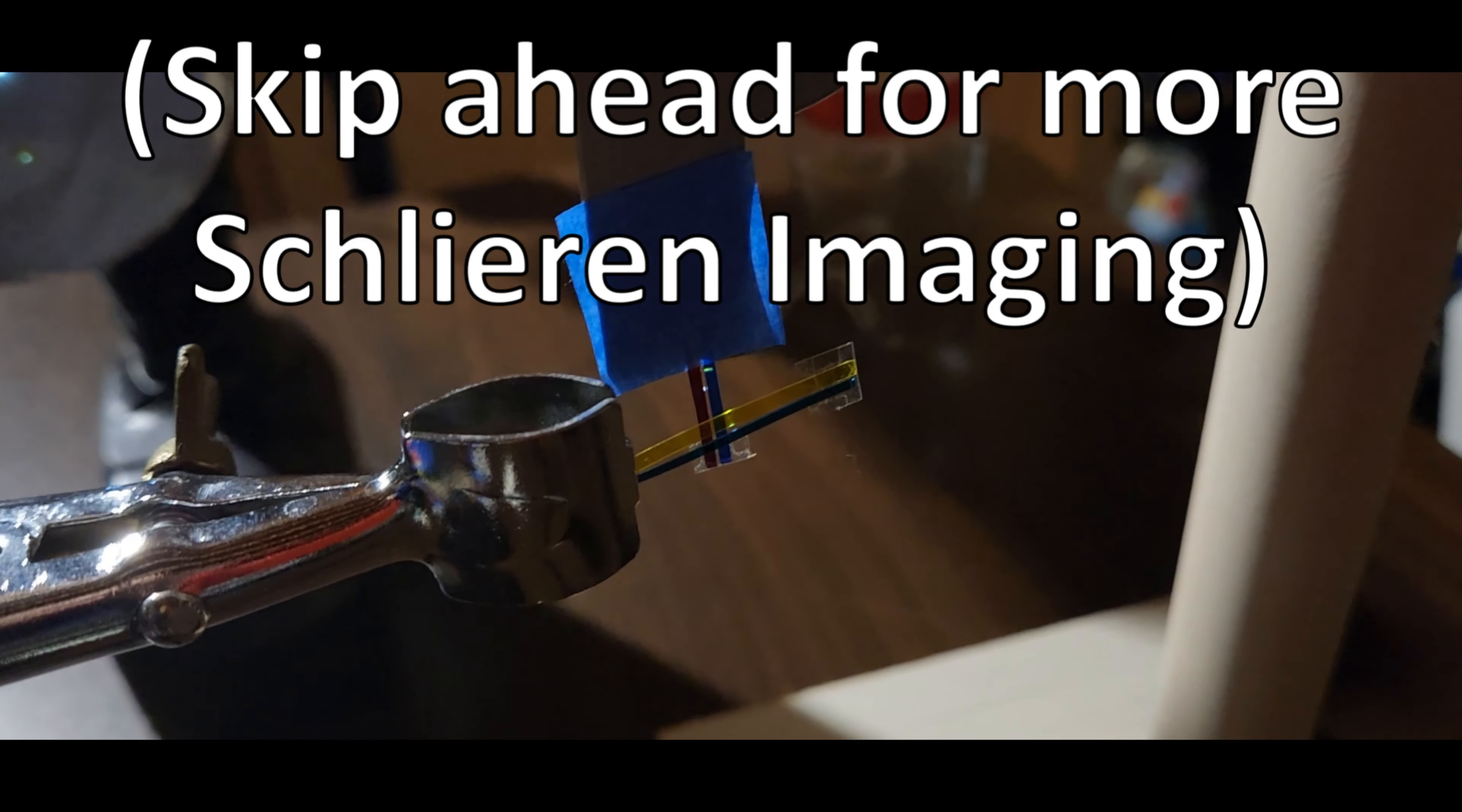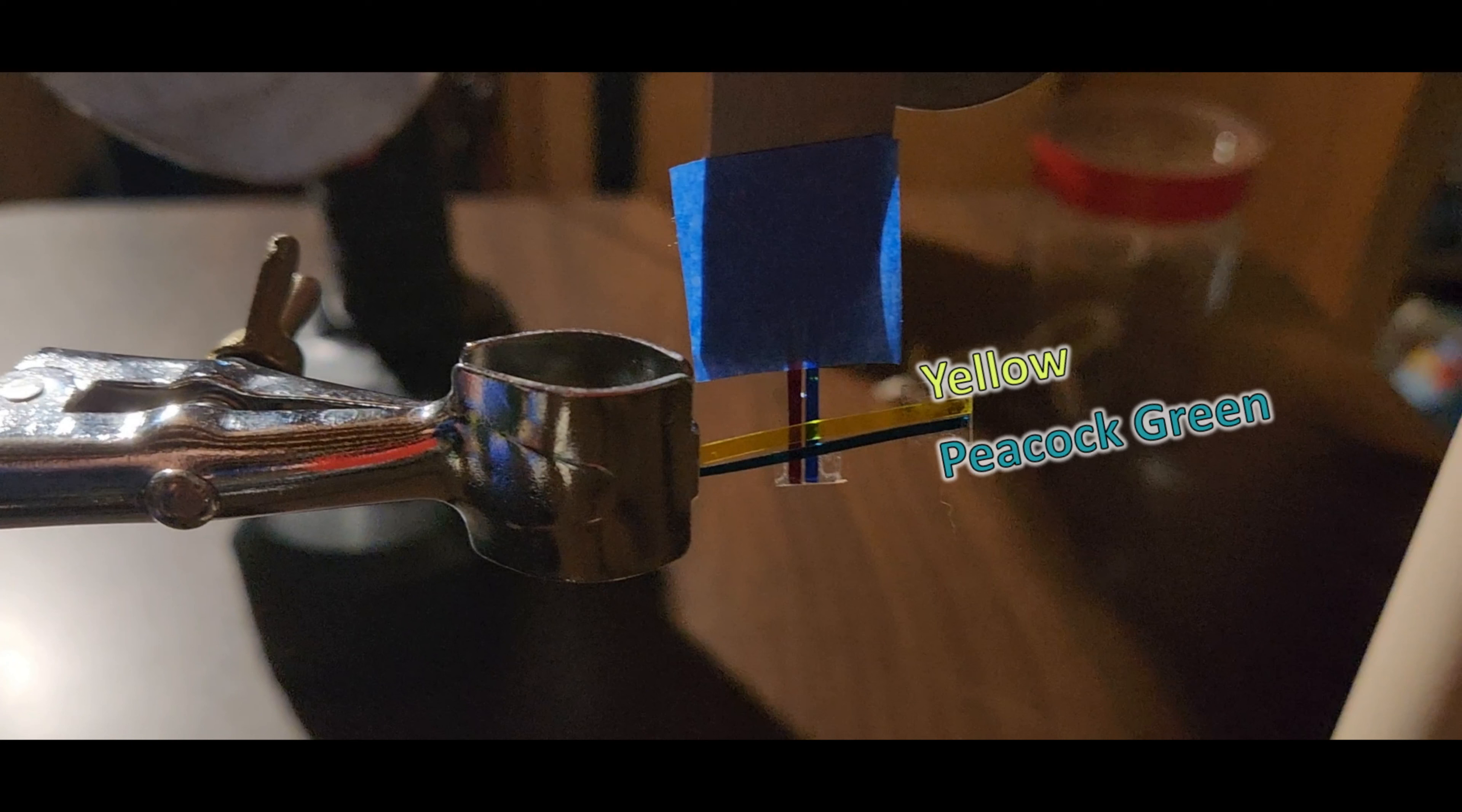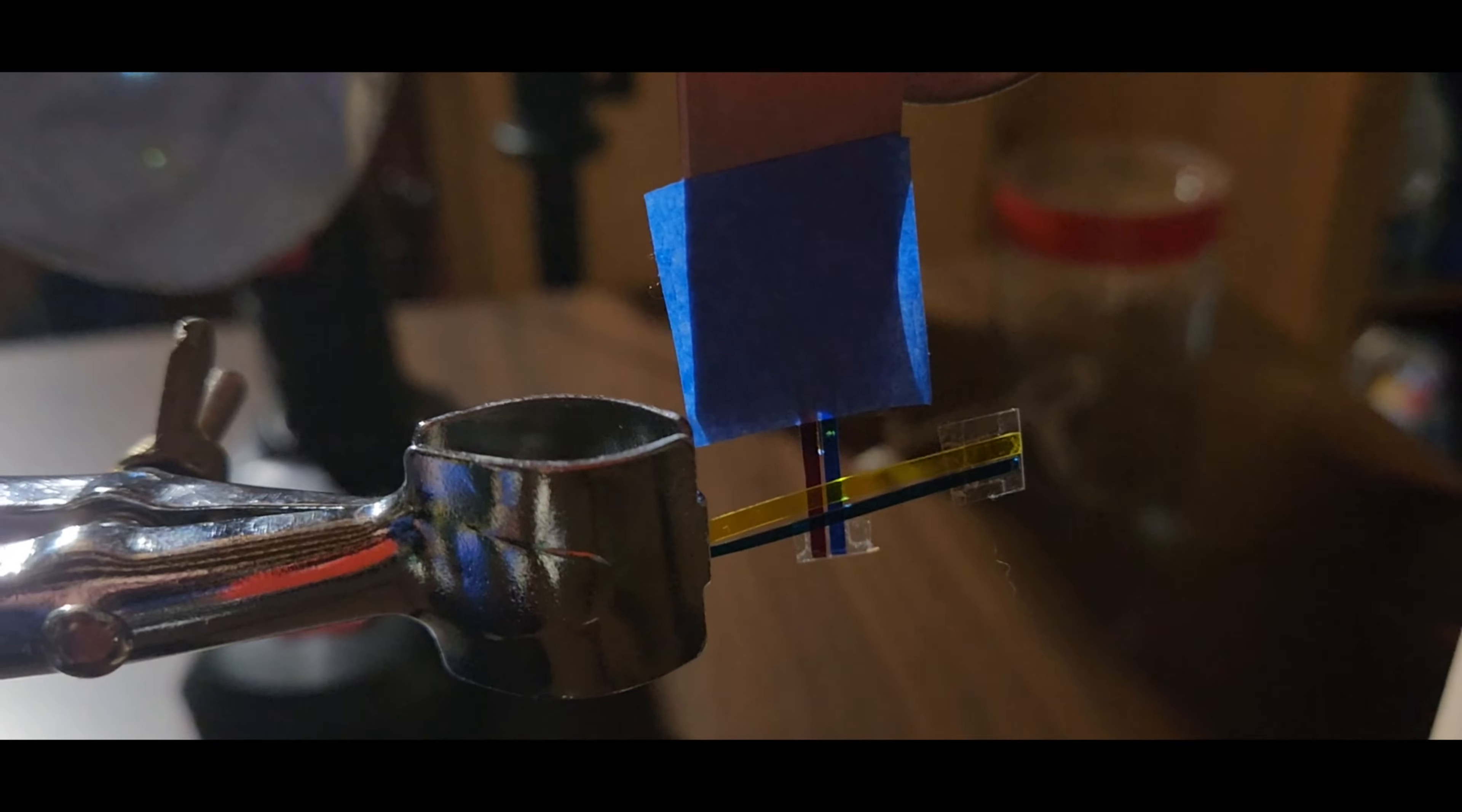So this is my color filter setup with four different filters. You can see the yellow is on top, the peacock green is on bottom, and then the blue and magenta are on the sides. And this is viewed looking in toward the camera and so it's oriented actually backwards from what you would see on the screen.